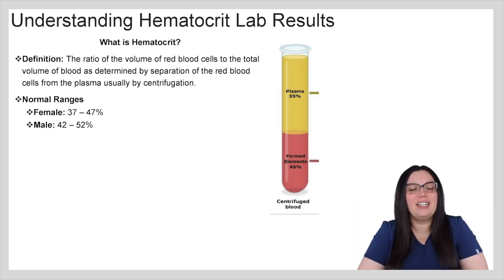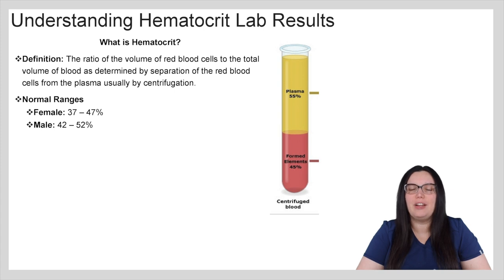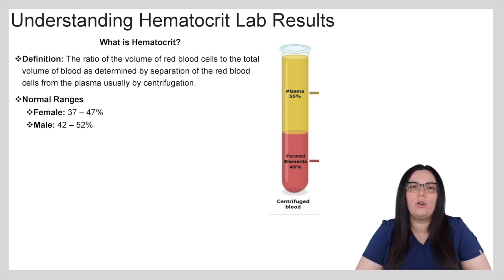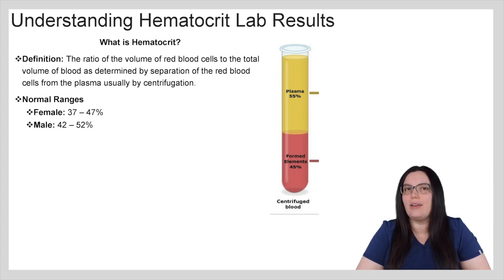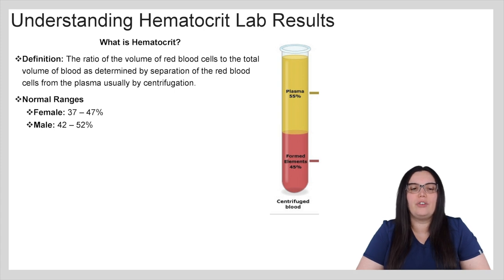So what is hematocrit? Hematocrit is defined as the ratio of the volume of blood cells to the total volume of blood, as determined by separation of the red blood cells from the plasma, usually by use of a centrifuge. Just like hemoglobin, our normal values are going to be gender dependent. Females have a normal hematocrit of 37 to 47 percent, and males have a normal hematocrit of 42 to 52 percent.